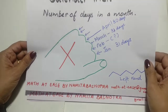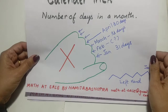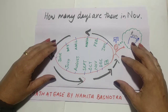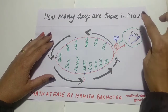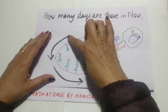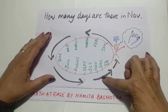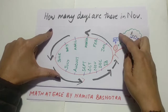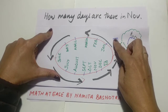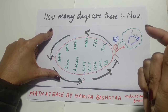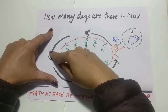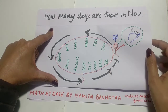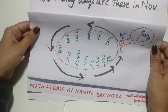But this is not the trick I'm going to discuss here. I have come up with a new trick for you. The problem with the old trick is that just to know how many days are in November, I have to take a marathon across all the months of the year on my fist, and only then the answer comes. I want the answer to come immediately within seconds.